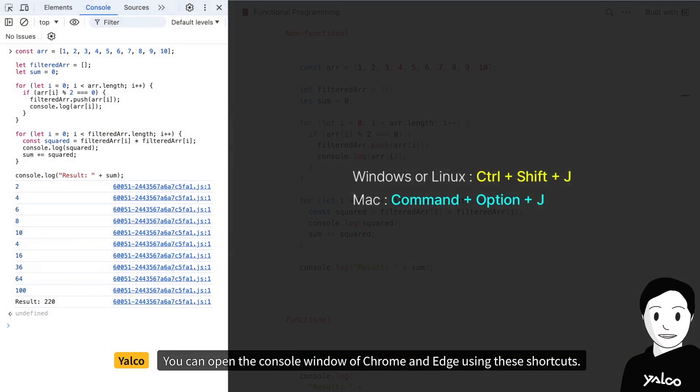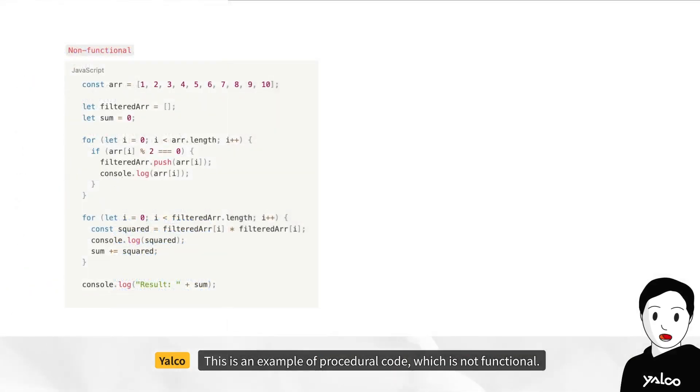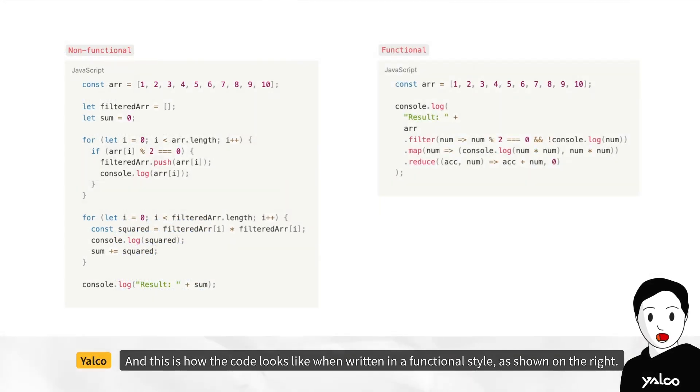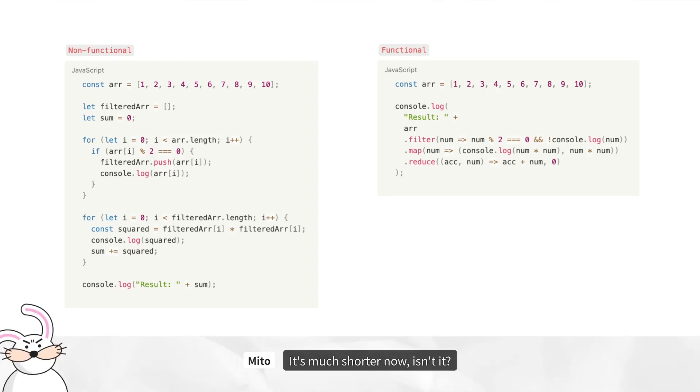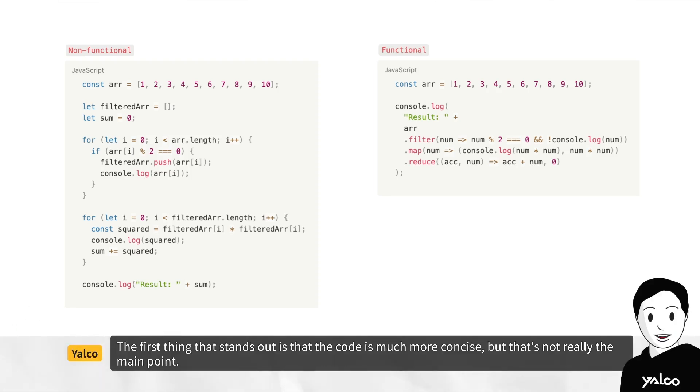You can open the console window of Chrome and Edge using these shortcuts. This is an example of procedural code which is not functional, and this is how the code looks like when written in a functional style as shown on the right. You can see the exact same execution result with this code. It's much shorter now, isn't it?